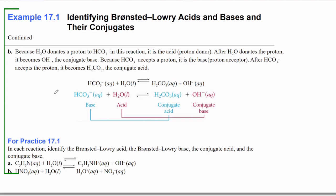For B, we have bicarbonate, HCO3- plus water yields carbonic acid plus hydroxide. So the bicarbonate is acting as a base because it's taking an H+ away from our water to form the conjugate acid, which is carbonic acid plus hydroxide.